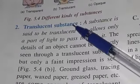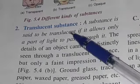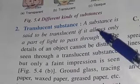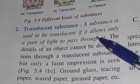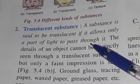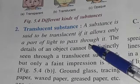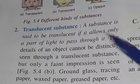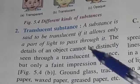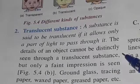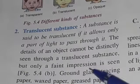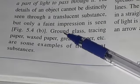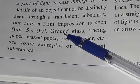Second is Translucent Substance. A substance is said to be translucent if it allows only a part of light to pass through it. It means a very small amount of light can pass through this substance — that kind of substance is known as Translucent Substance. The details of an object cannot be distinctly seen through a translucent substance; only a faint impression is seen. So we cannot see objects clearly.